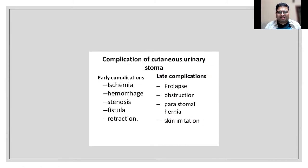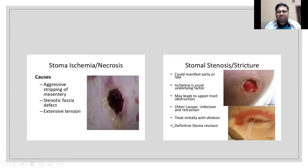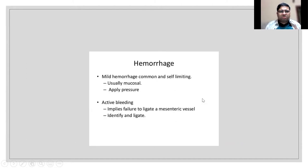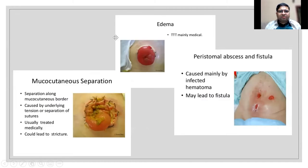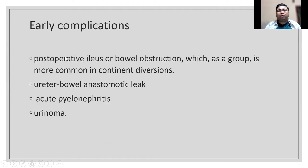Complications include ischemia, hemorrhage, stenosis, and fistula. Stomal ischemia is very common and often requires stoma revision. Stenosis and hemorrhage were discussed. Edema takes time to resolve and usually doesn't need revision. Other complications: mucocutaneous separation, peristomal abscess, fistula, stoma retraction, and prolapse. Early complications of continent diversion include bowel obstruction, leaks, pyelonephritis, and urinoma.